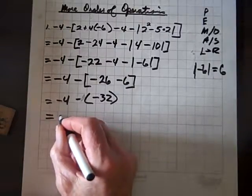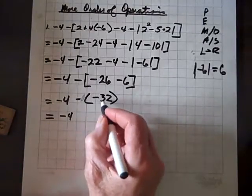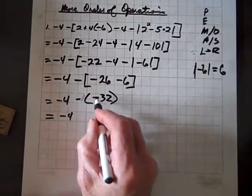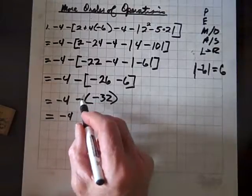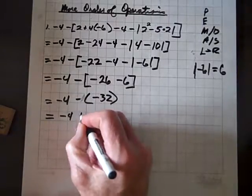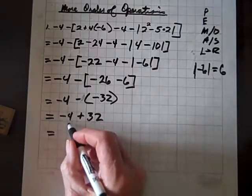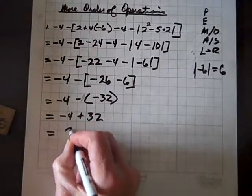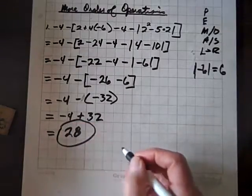Now we've got negative four, and we have to work out the parentheses — they're already worked out, so now we just have a negative times a negative. That's an even number of negatives in the product, so that's going to be positive thirty-two. And finally we can deal with this negative four: negative four plus thirty-two is twenty-eight. So check my work — I think we have it.